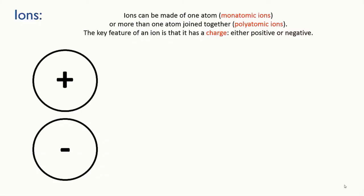First of all, a bit of vocabulary. If an ion is just a single atom, we call it a monatomic ion. This comes with the suffix mono, meaning one. And if it's made from more than one atom joined together, we call it a polyatomic ion, because poly means many.